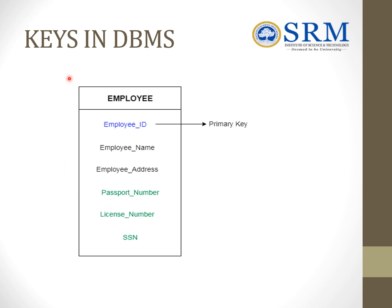Here is the example: the employee database has attributes employee ID, employee name, employee address, passport number, license number, and SSN number. Employee ID is a unique key for each employee, and we can also choose other unique keys such as passport number, license number, and SSN number.